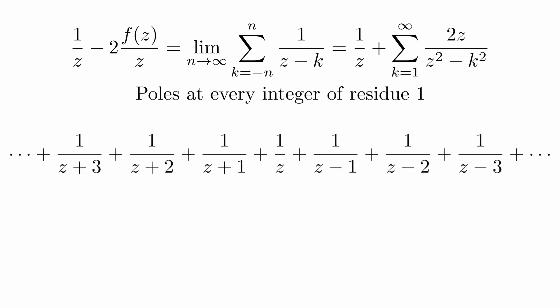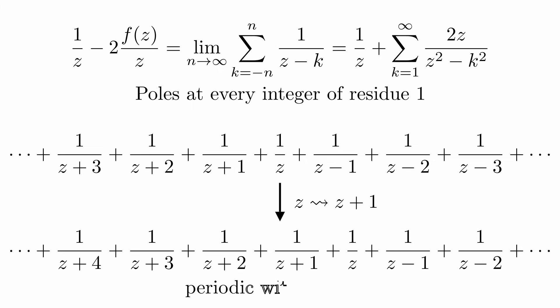An interesting property of this function is that when you plug in z plus 1, all the terms get shifted one to the right. But the value doesn't change. So this is periodic with period 1.